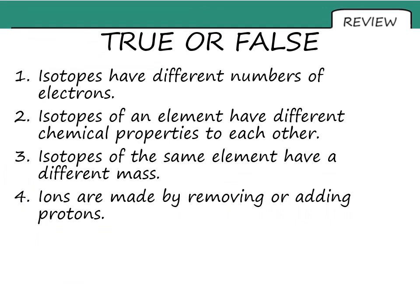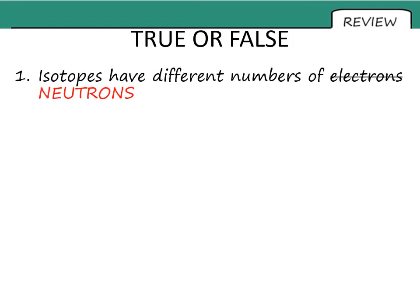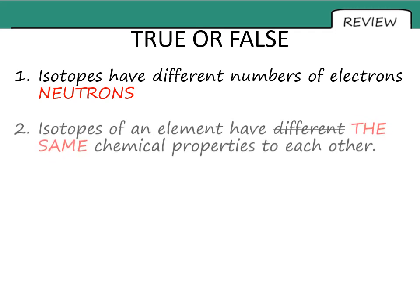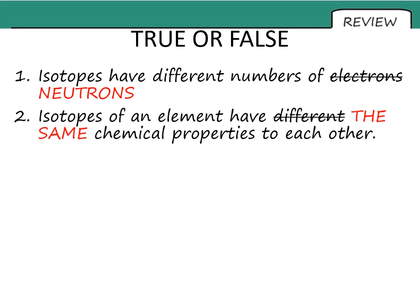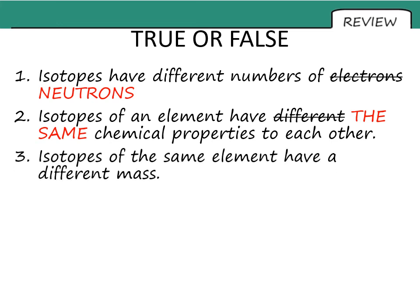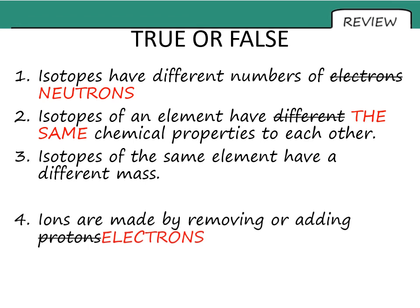So true and false then. Four questions. For each false answer, could you change a single word and make it true? Pause the video while you try it and check your own answers. So isotopes have different numbers of neutrons, not electrons. They have the same chemical properties as each other. They do have a different mass, that is correct. And ions are made by the removing or adding of electrons.